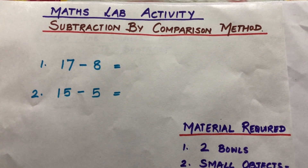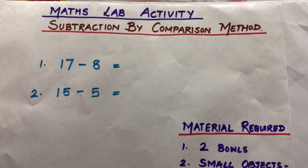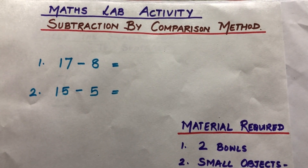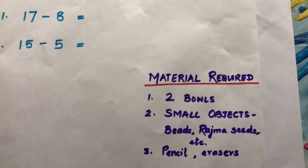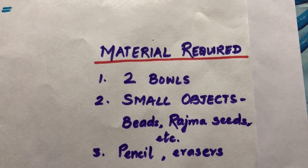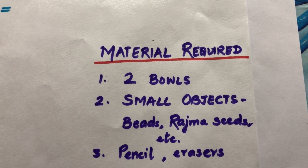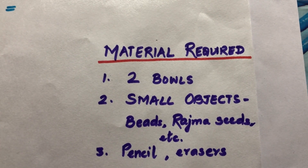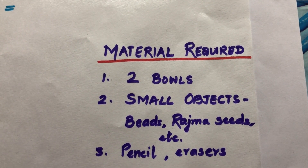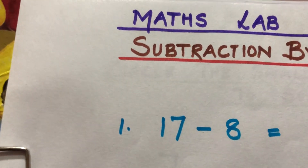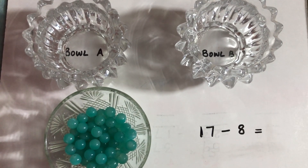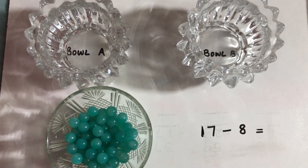Hello children, today we will do a maths lab activity and our topic is subtraction by comparison method. The materials we require are two bowls, some small objects like beads, rajma seeds, chole, almond — you can take any small thing — a pencil and eraser. Our first question is seventeen minus eight.